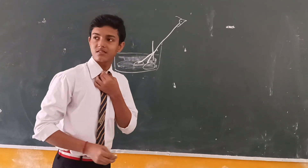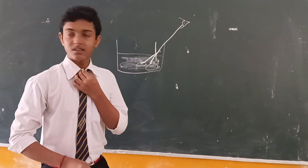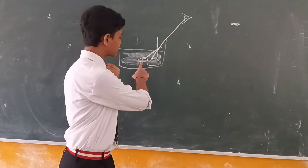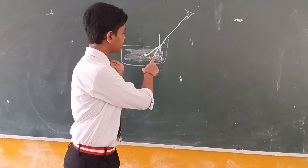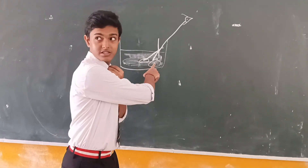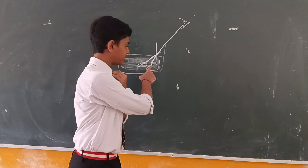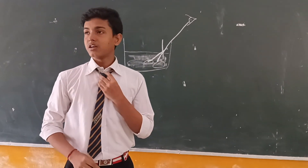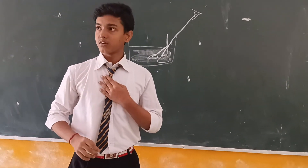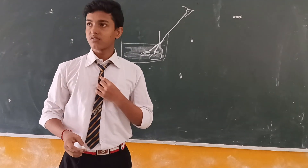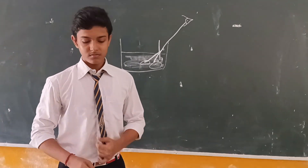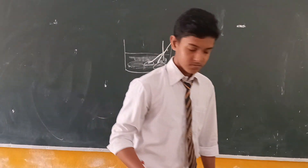So that position is called the apparent position. For the observer, this is the apparent position and the object is placed here — it is called the real position. So this phenomenon is happening due to refraction of light. Very good. Thank you.